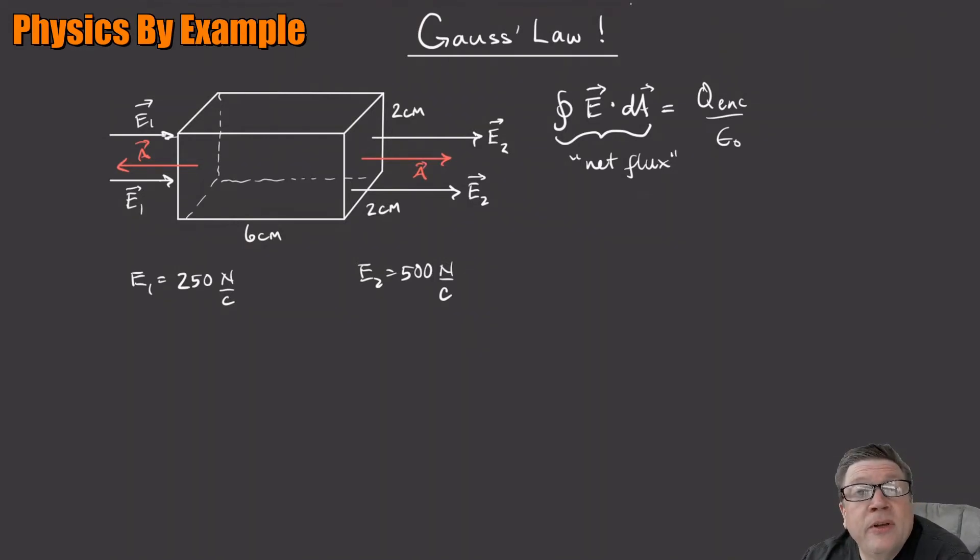The electric field is uniform across the surface, so that means I can turn this, instead of a complicated interval, let me write it in white, instead of a complicated integral, we can just make this into a sum of E dot A, because A is uniform where E is on each side, and so this is just Q enclosed over epsilon naught.